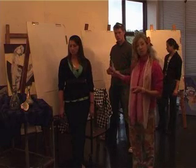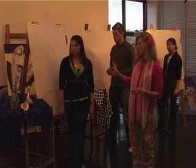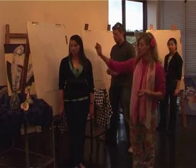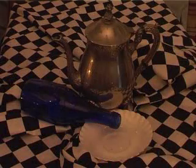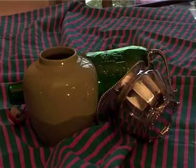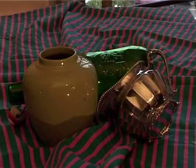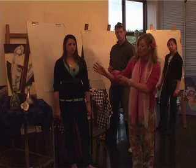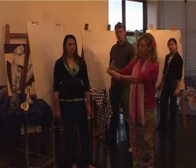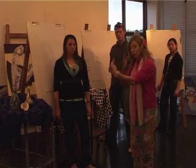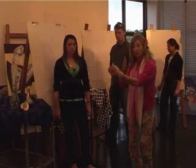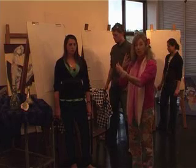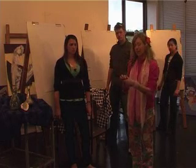All of the compositions are set up so that there's a glass, a metal, and a ceramic object on a cloth which has some kind of geometric pattern in it. Each of the still lives are set up so that objects overlap and occlude one another, which helps to give the composition a lot of 3D.